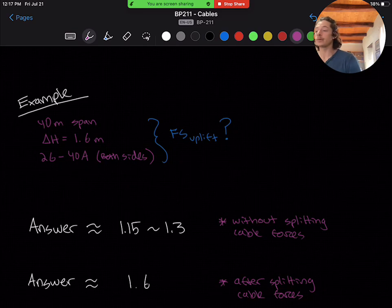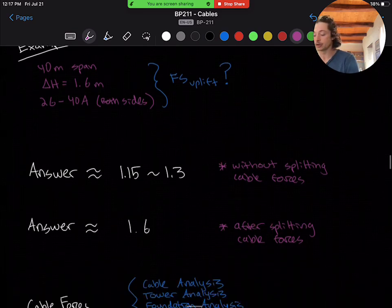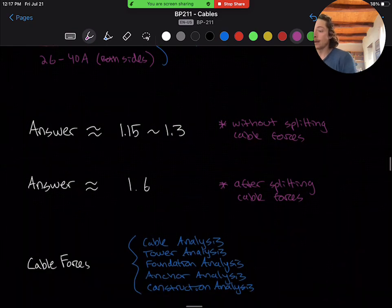Now, when we discuss splitting the cable force vectors, this will affect the majority of our structural systems in the suspended bridge, namely the cable analysis, tower analysis, foundation and anchor analysis, and construction analysis subsystems.